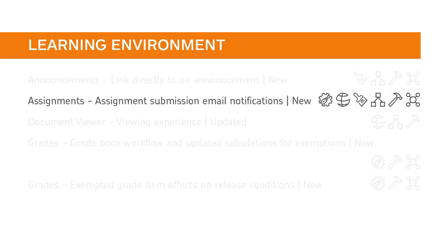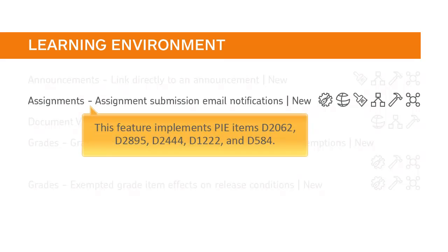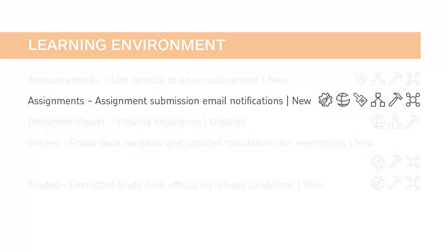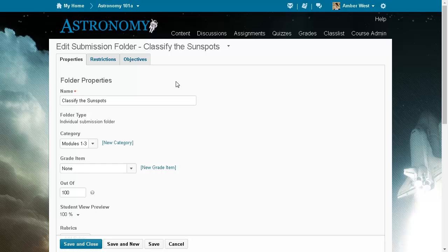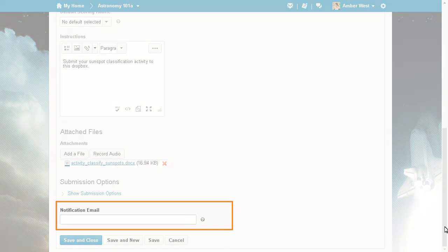Instructors can now receive an email notification when users upload a new submission to an Assignment Submission folder. This feature implements PI items D2062, D2895, D2444, D1222, and D584. When instructors create or edit an Assignment Submission folder, from the Properties tab, navigate to the Submission Options section, and enter an email address or comma-separated list of email addresses in the Notification Email field. The specified email addresses will receive an email notification when a new submission is uploaded.